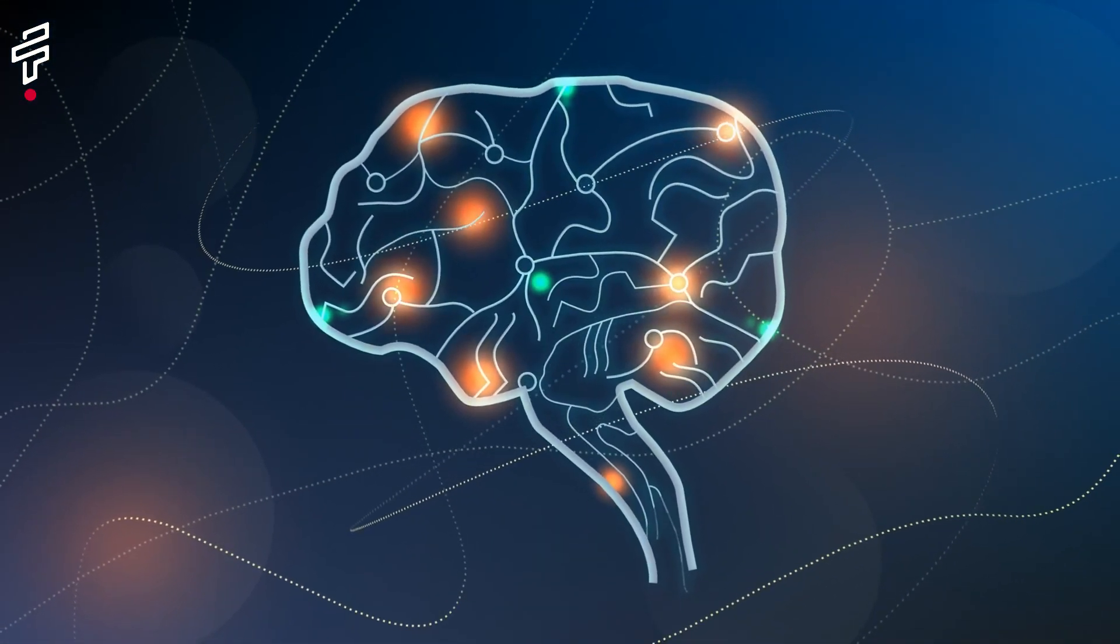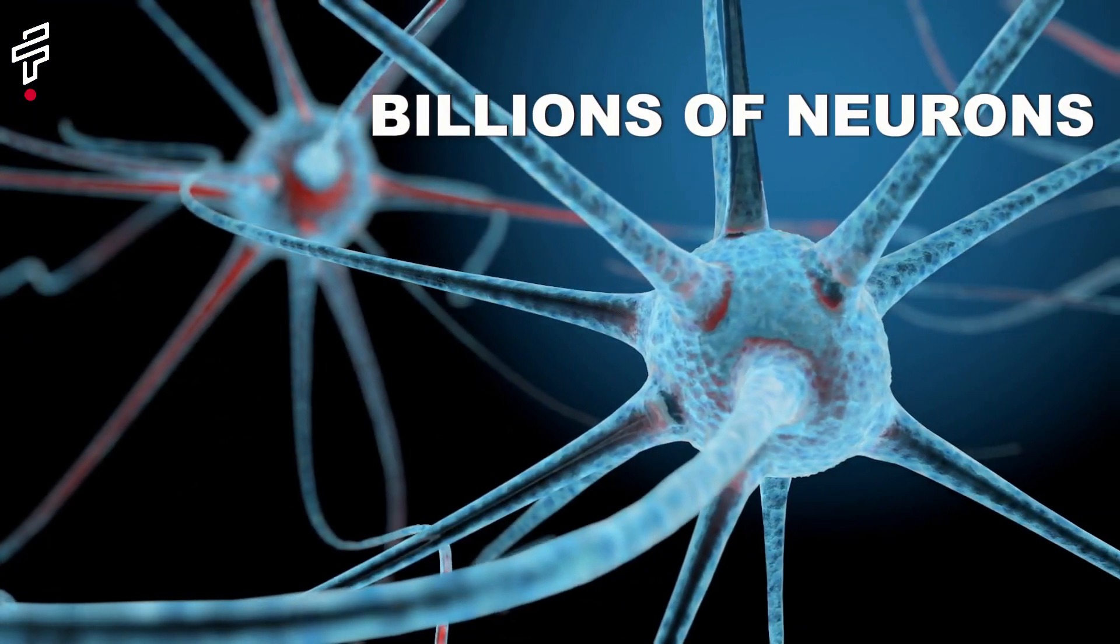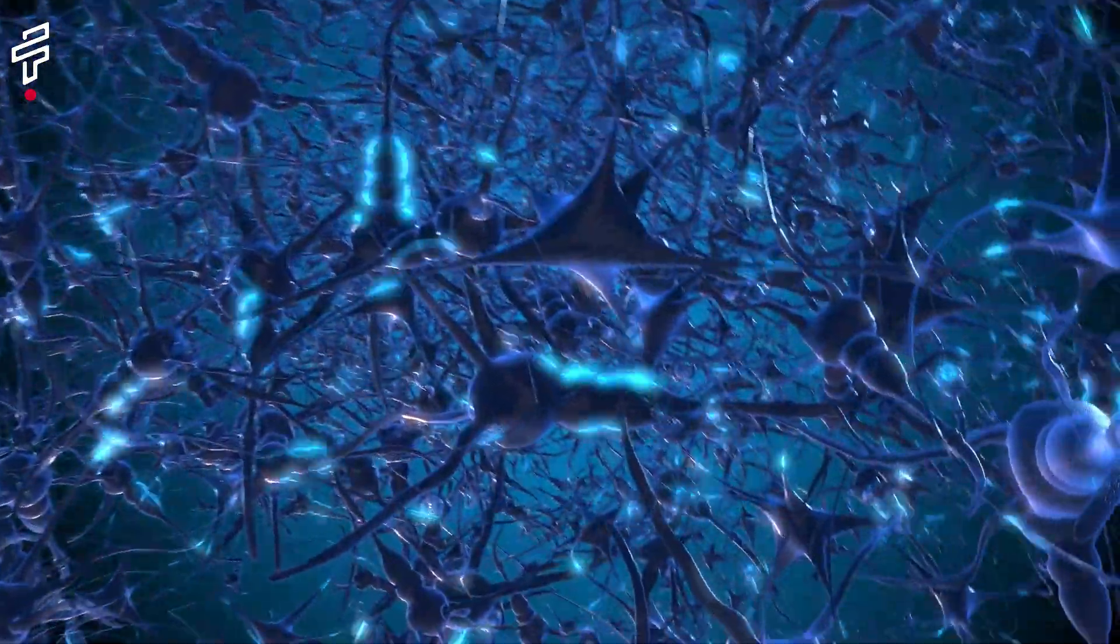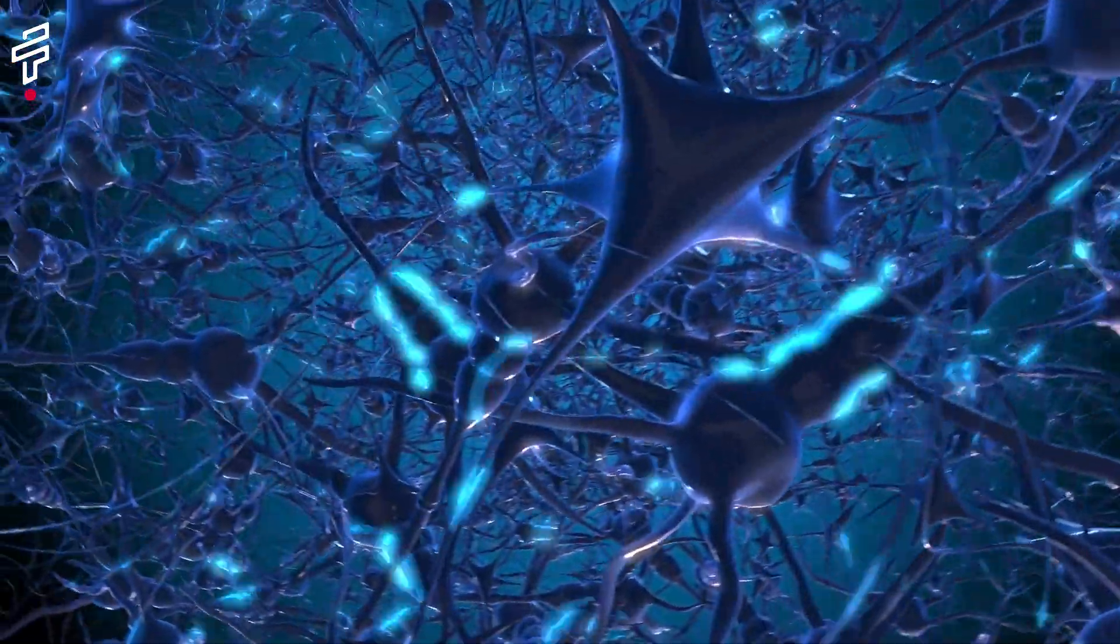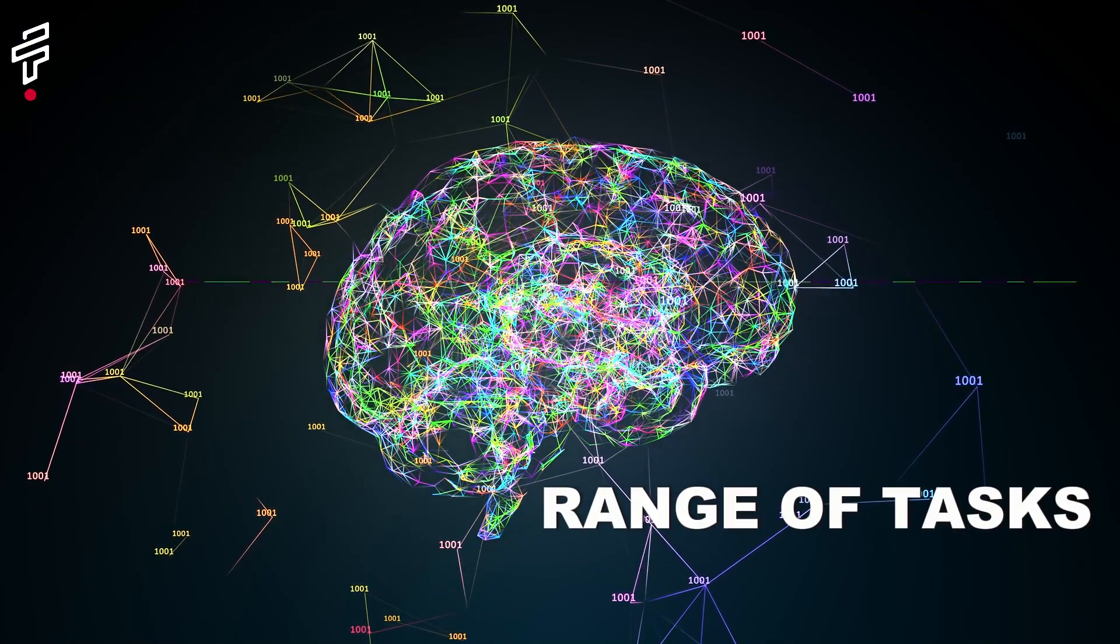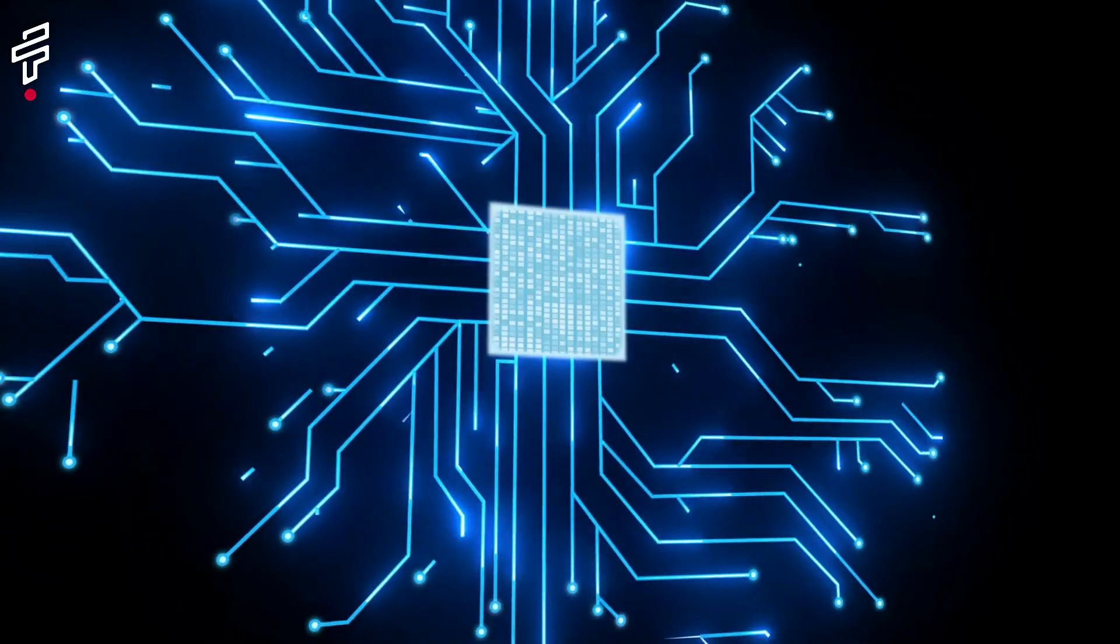Fact number one, the brain is the most complex organ in the human body. Made up of billions of neurons, each neuron can connect to thousands of other neurons, creating an almost infinite number of possible connections. This complexity allows the brain to perform an incredible range of tasks from thinking and feeling to controlling movement and processing information.